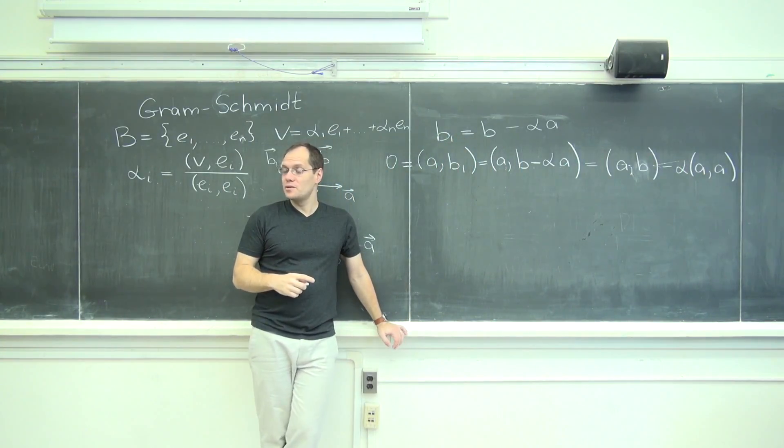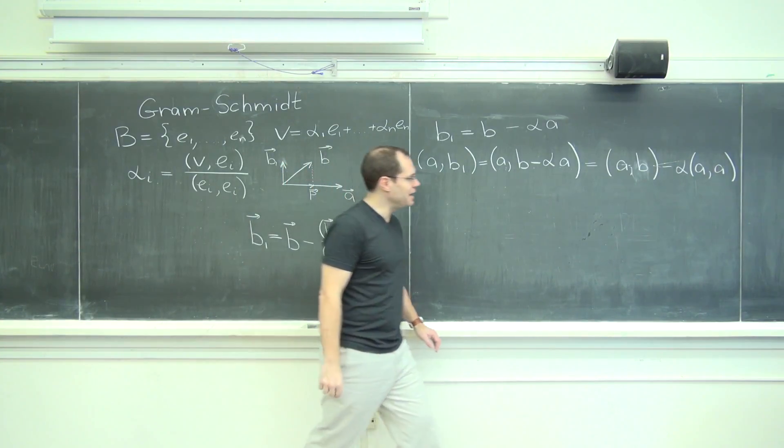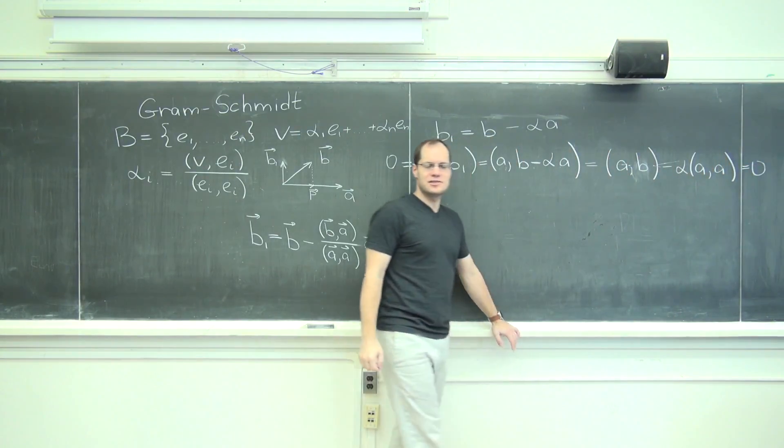And I want my choice of alpha, right? That's what I'm after, I'm after alpha. And so I want my alpha to be such that this equals zero. From over there, equals zero.